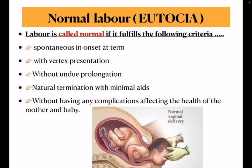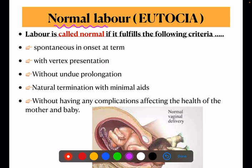Now we have read the general definition of labor. What do we call normal labor? Normal labor has another name — eutocia. This is important; it is asked in competitive exams. Labor is called normal — eutocia — if it fulfills the following criteria.